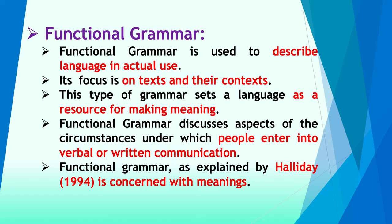The last point: functional grammar as explained by Halliday (1994) is concerned with meanings. Halliday is a very famous linguist who wrote 'An Introduction to Functional Grammar.' He says functional grammar is basically concerned with meanings from different perspectives. Sometimes when you read the Holy Quran, or any book of drama or poetry, the same text will have different meanings to different people in different conditions. All these aspects of meanings are discussed in the subject matter of functional grammar.